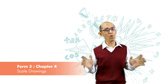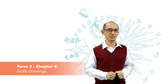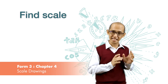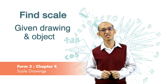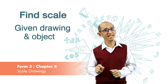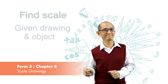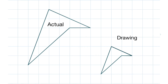We are going to look at more examples on how to find the scale when we are given a drawing and an actual object. We need to make sure which one is the actual object and which one is the drawing. The one on the left is the actual object and the one on the right is the drawing.